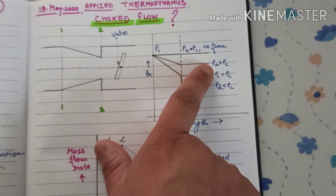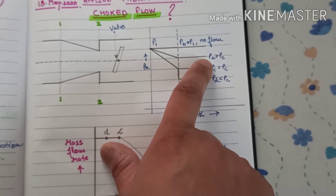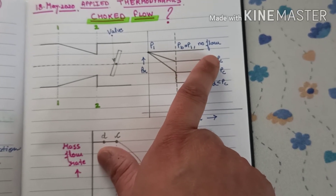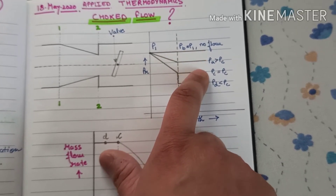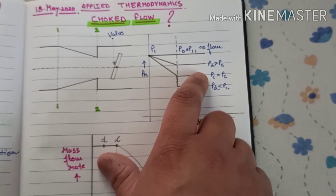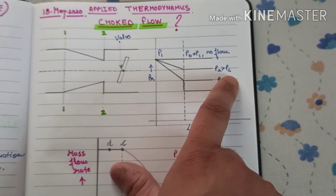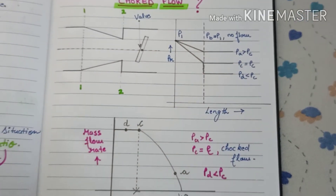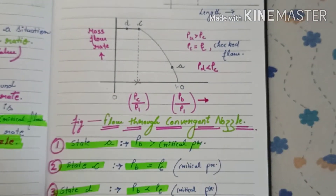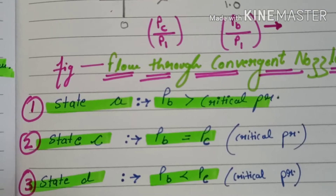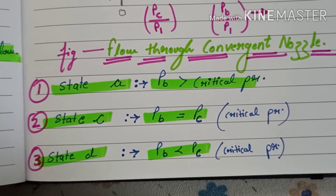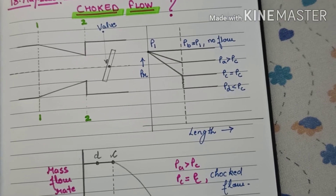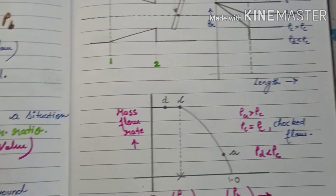In this diagram there are three states shown — a, b, and c. State a is the state in which back pressure is greater than critical pressure. State b is where back pressure equals critical pressure. State c is where back pressure is less than critical pressure.